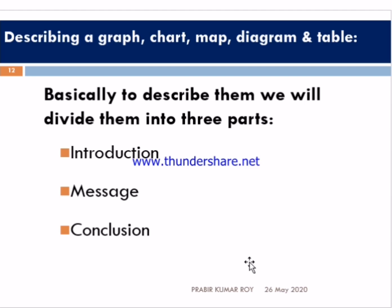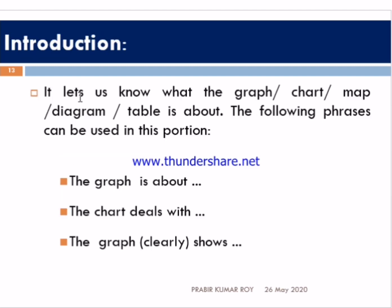Whenever you want to describe a graph, chart, or map, you have to describe them in three sections: number one, introduction; then message; and last of all, conclusion. Introduction lets us know what the graph, chart, or map is about. In the introduction you can start sentences like: 'the graph is about,' 'the chart deals with,' or 'the graph clearly shows.'